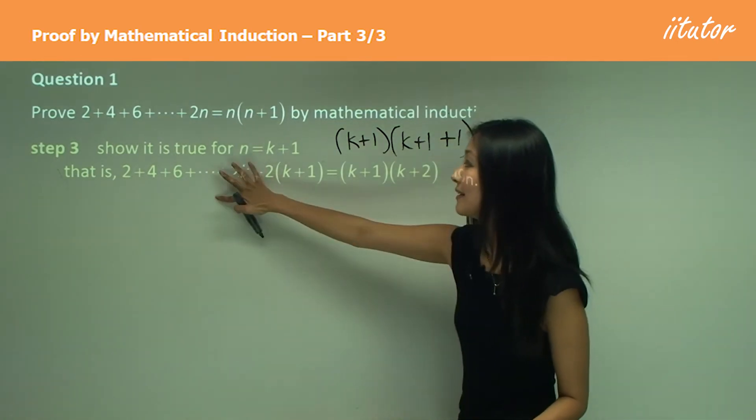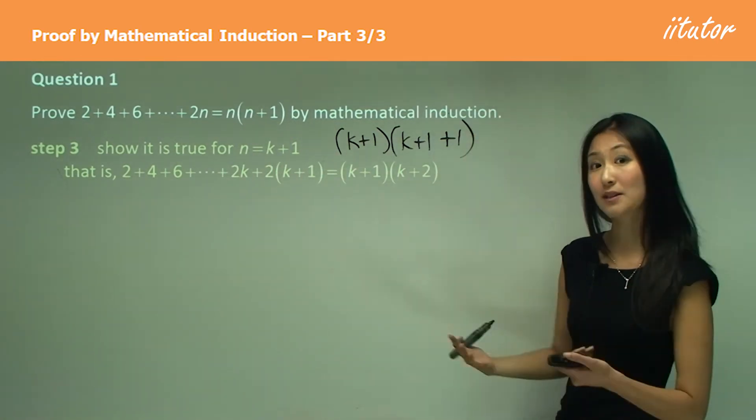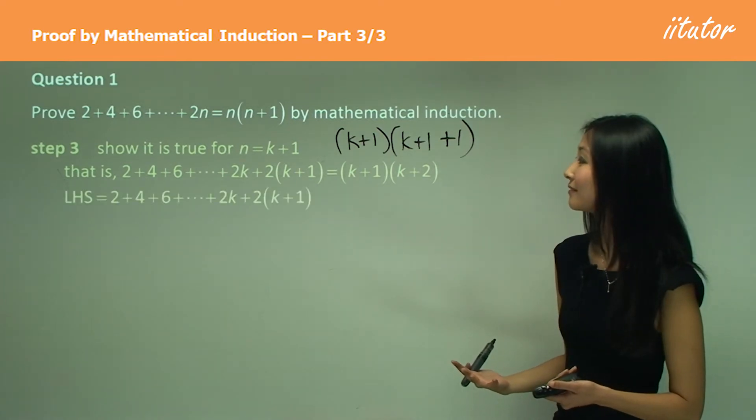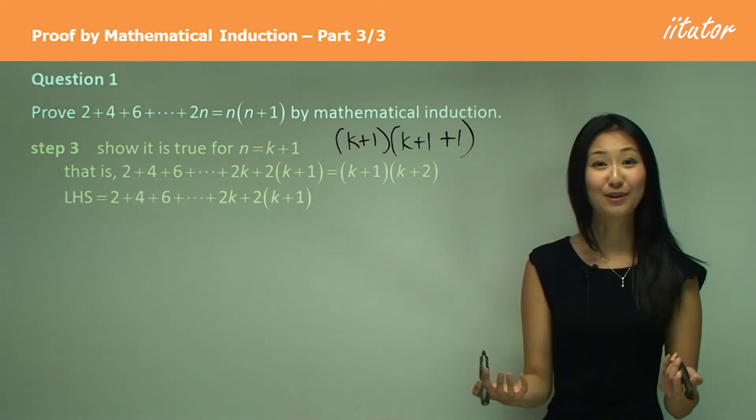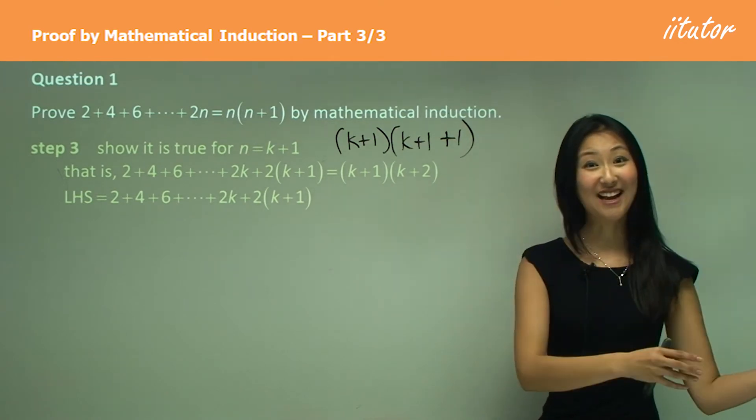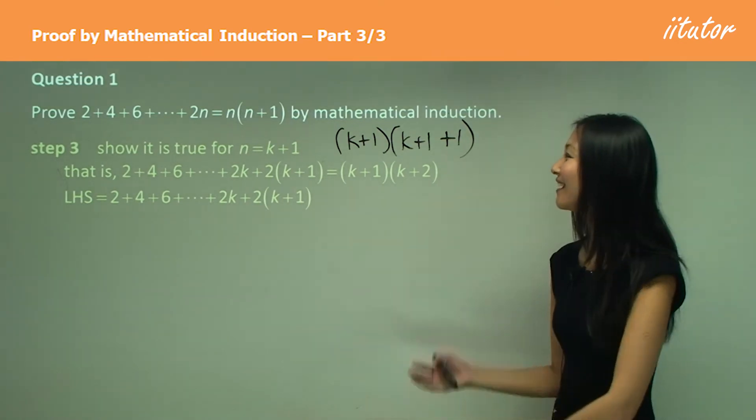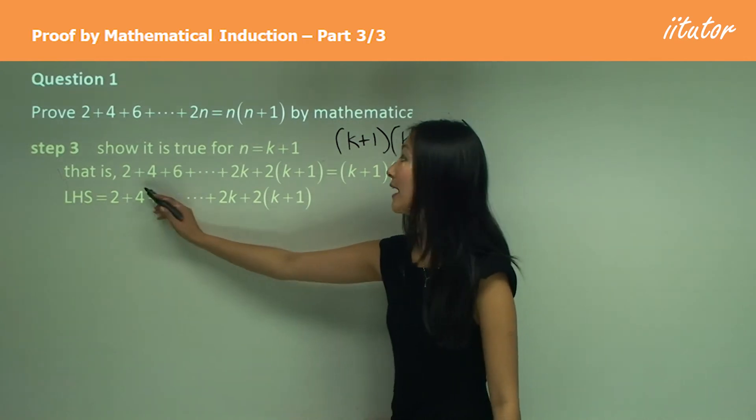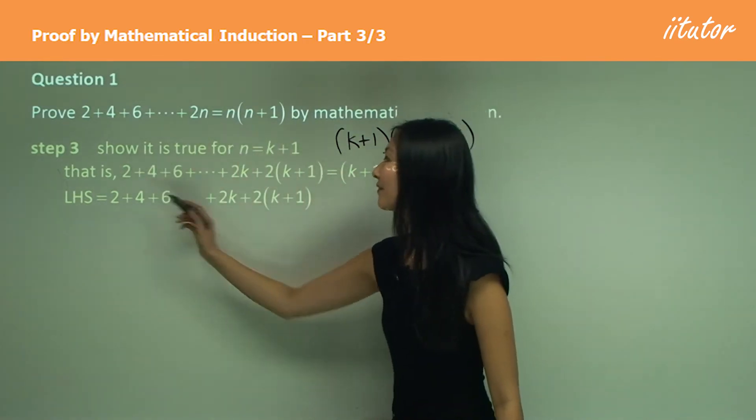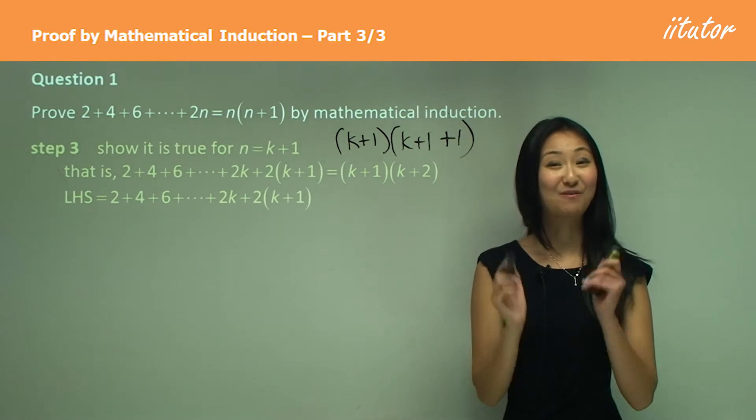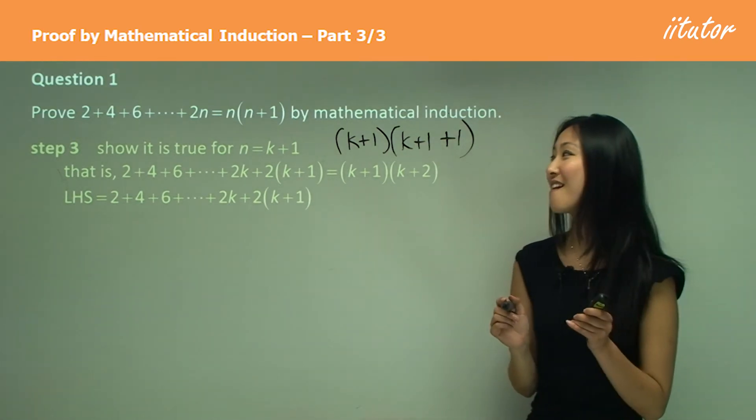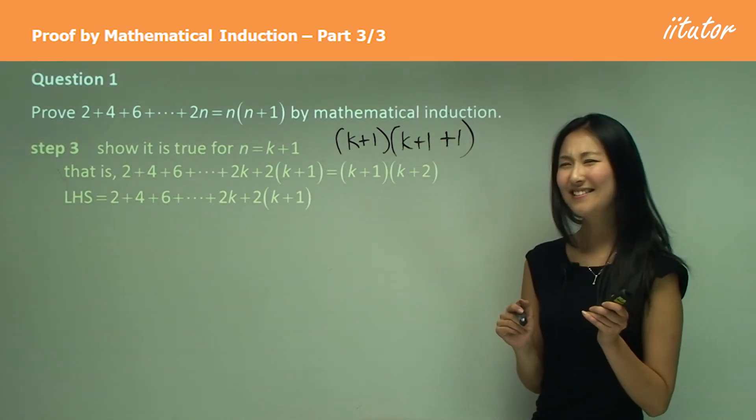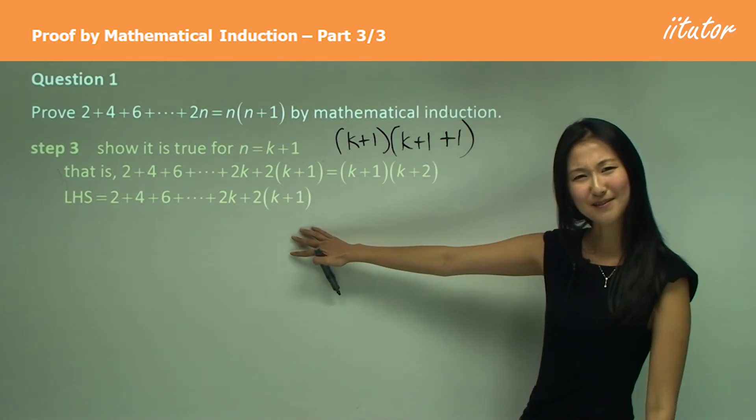So we want to prove that this equals to that. That's what we're doing. So how do we prove? We always do left hand side equals to right hand side. So starting off here, we have the left hand side equals to this portion. Now, this is where I want you to use the assumption from step 2. Can you see how we can somehow use the assumption?